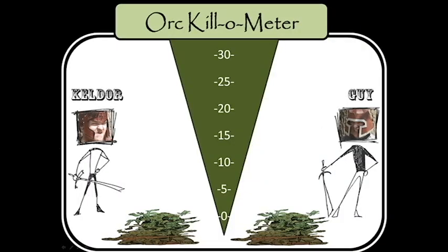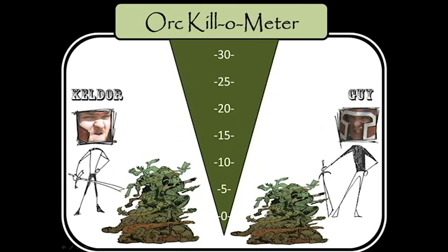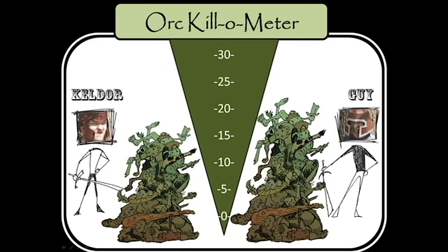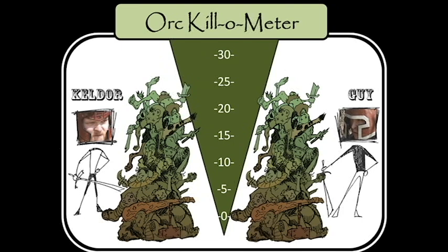Kelder and Guy need to decide if they will be better off if they specialize in either orc slaying or sword making. They were both timed at how long it would take them to slay 25 orcs individually, during a fearsome orc battle much too graphic for this program.